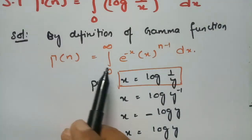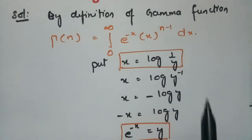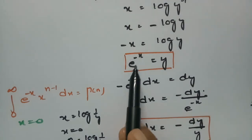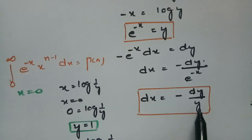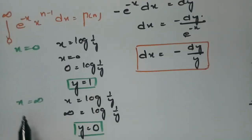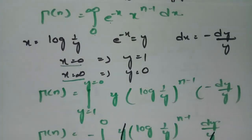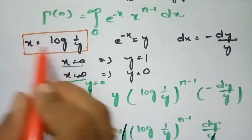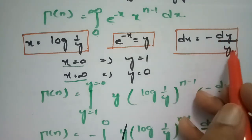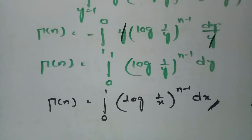To summarize: from the definition of the gamma function, gamma n equals the integral from 0 to infinity of e to the power minus x times x to the power n minus 1 dx. We put x equals log(1/y), so e to the power minus x equals y and dx equals minus dy by y. With the transformed limits y equals 1 when x equals 0, and y equals 0 when x equals infinity, substituting and simplifying gives gamma n equals the integral from 0 to 1 of log(1/x) to the power n minus 1 into dx.